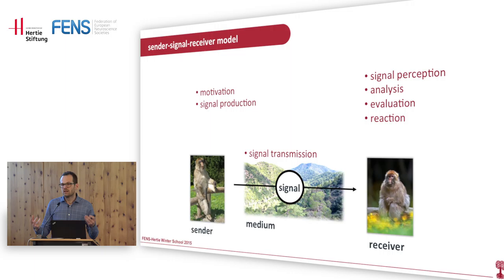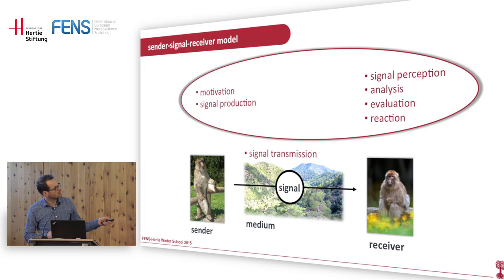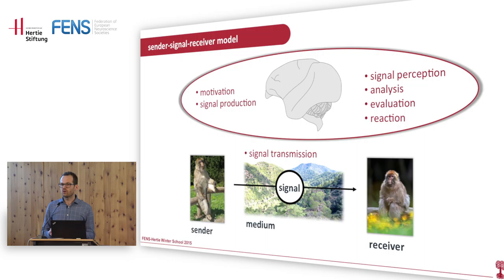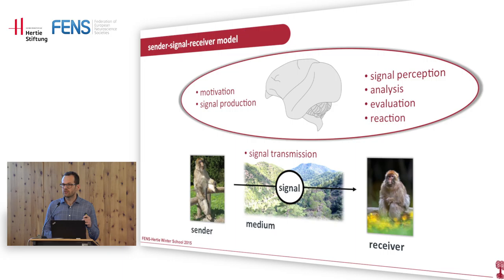Ideally in a communication system, the receiver would then answer with another vocalization, becoming the sender in the next turn. All of these parts crucial for vocal communication require the brain. Without the brain there is no vocal communication — even in mammals that may not need the cortex in most cases. Understanding the underlying neural mechanisms is crucial to further understand the behavior, and vice versa.